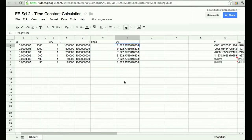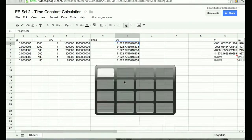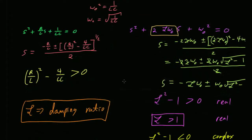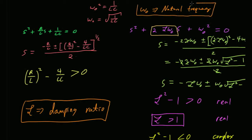Omega naught is what we call the natural frequency of the circuit. The natural frequency does not depend on the resistance — it just depends on the relationship between the inductance and the capacitance, according to ω₀ = 1/sqrt(LC). Now let's compute zeta. Knowing omega naught, I'm going to take my R over L term, divide out the 2 and the omega naught, and that should just leave me with zeta.